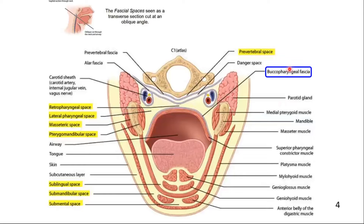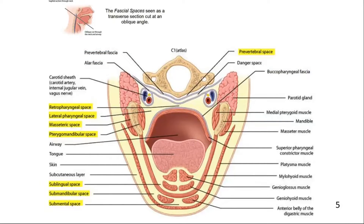Now, this is the buccopharyngeal fascia, the alar fascia, and this one is the pre-vertebral fascia. Similarly, we have three spaces: the retropharyngeal space, danger space, and pre-vertebral space.